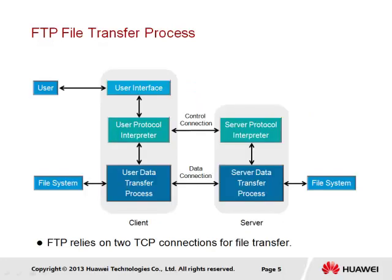Communication between the client and server works on the principle of two connections. The first is the control connection, established for communicating instructions over TCP port 21, where communication occurs between protocol interpreters on the client and server. The user protocol interpreter initiates the connection to the FTP server and, once established, sends FTP commands and interprets received replies. The server protocol interpreter interprets commands from the client and responds accordingly, while also communicating with the data transfer process to establish the data connection.